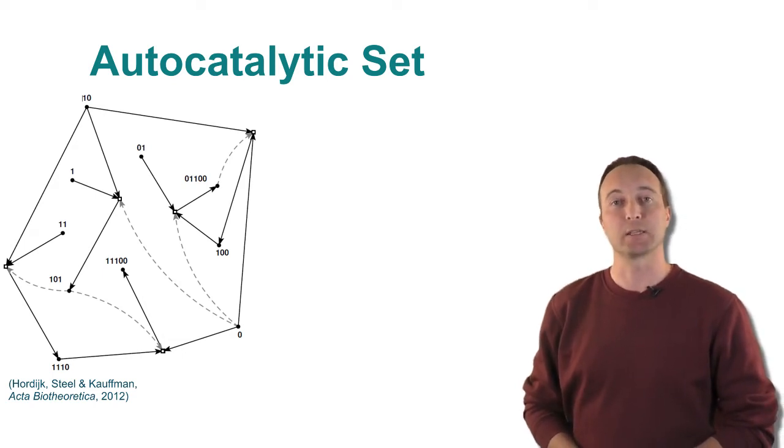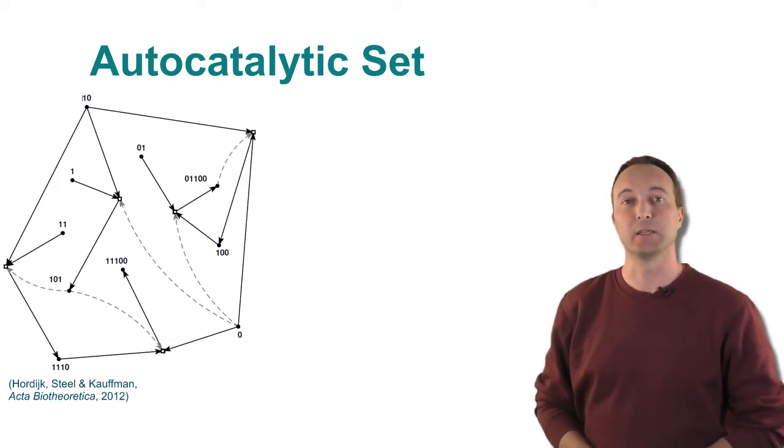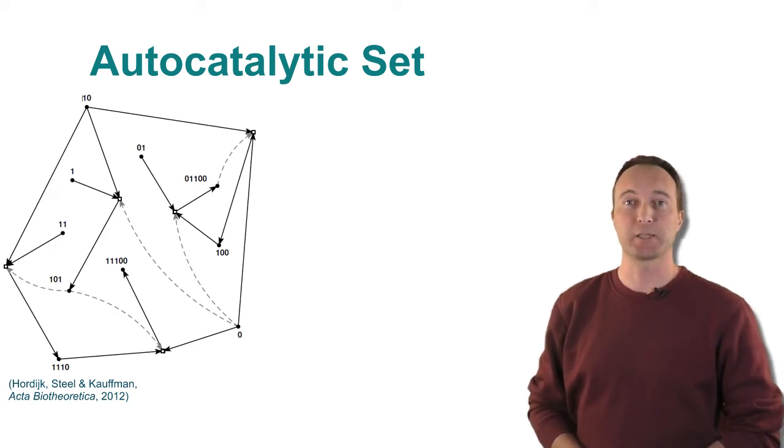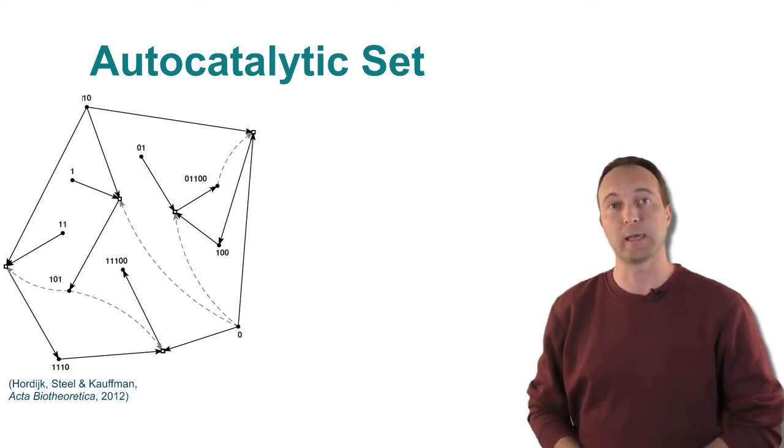Given the definition of an autocatalytic set, it is easy to verify that this reaction network satisfies its two properties. Note that this simple example is similar to the experimental systems that have been constructed in the lab.